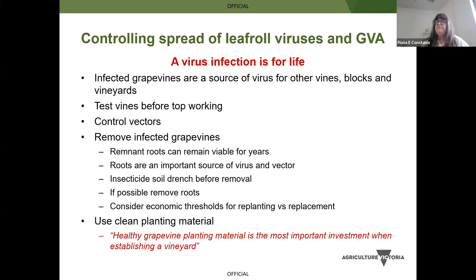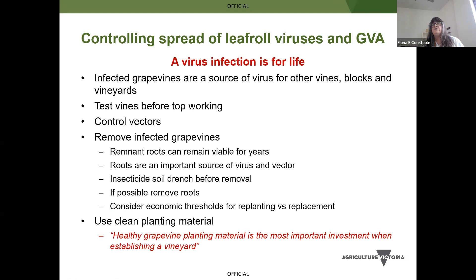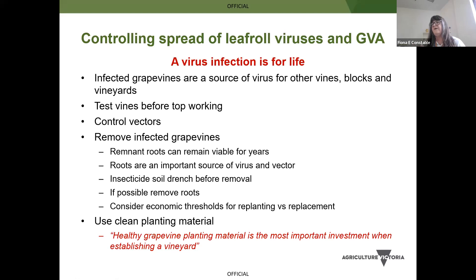A virus infection is for life and infected grapevines are a source for other vines. If you're going to top work your vines, you definitely need to test because viruses can impact on graft compatibility. You need to control vectors, and removing infected vines can help control spread of virus in a vineyard. If you do remove a grapevine, try and remove as much of the remnant roots as you can. You might want to do a soil-drench insecticide to get rid of mealybug that might be living subterraneally. Think about when it's economically useful to remove a vine and replace it rather than potentially replacing a whole vineyard.